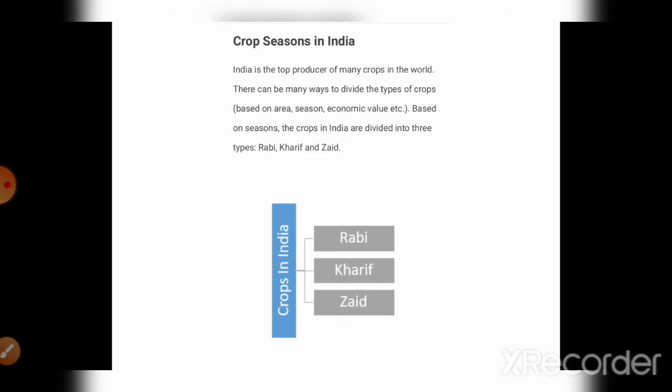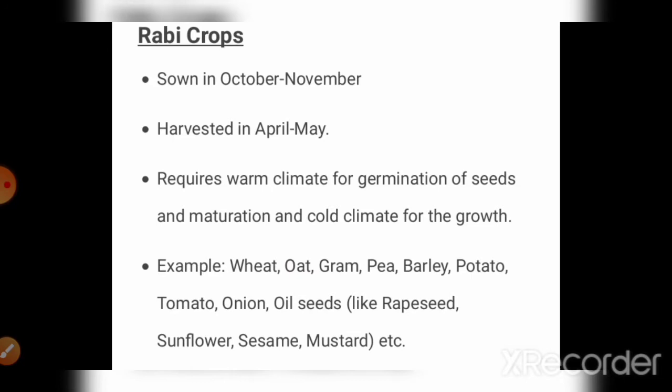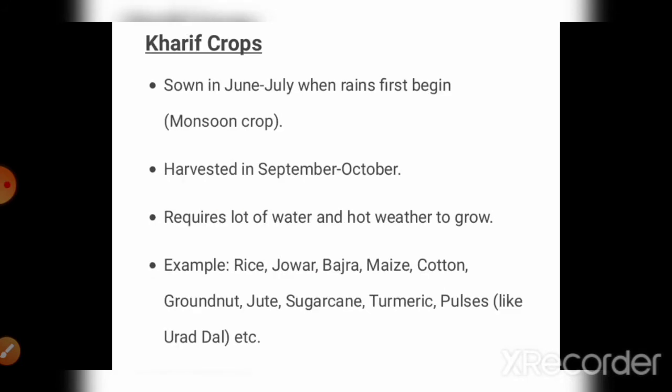Now let's discuss one by one. The first crop is Rabi crop. Rabi crop is sown in October to November season and harvested in April to May season, because its seeds require warm temperature for germination — not too hot, not too cold. October and November have pleasant climatic conditions. The seed maturation requires cold conditions, so harvesting happens in April to May. Examples of Rabi crops are wheat, oat, gram, pea, barley, potato, tomato, onion, and oil seeds.